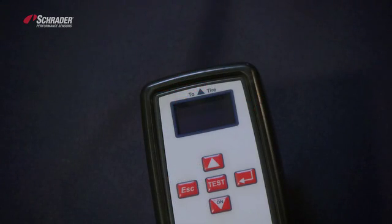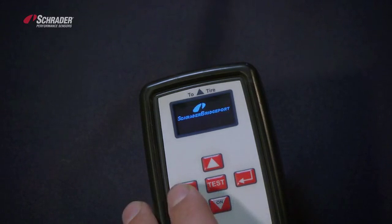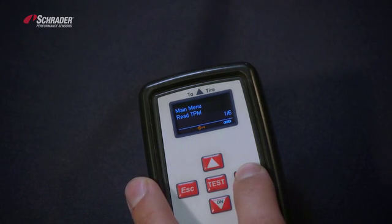We're now going to demonstrate how to copy an OE sensor using the Schrader 21230 tool. We're going to turn the tool on and select read TPM.